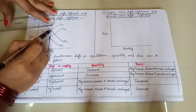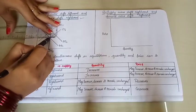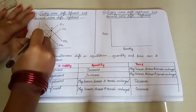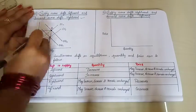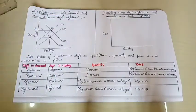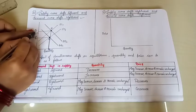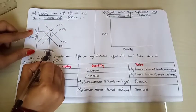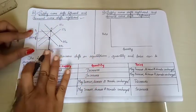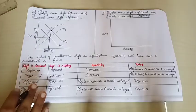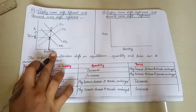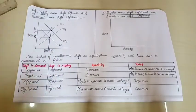Looking at the price in Case 3: the original price was P0, but because of the shift — supply leftward and demand rightward — the price has increased to a higher level. So quantity has remained constant or unchanged, while price has definitely increased. The possibility of increase or decrease exists, but according to our diagram, price has increased.